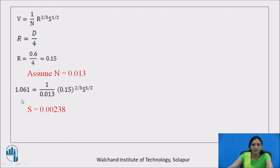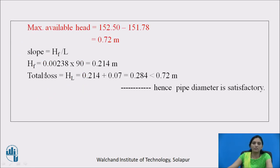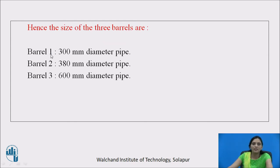Using Manning's formula, calculate slope for Barrel 3: slope = 0.00238. Check head loss: frictional head loss = slope × length = 0.00238 × 90 = 0.214 m. Total head loss = 0.214 + 0.07 = 0.284 m, which is less than 0.72 m. Hence, the 600 mm diameter pipe is satisfactory for Barrel 3. The three barrels are: Barrel 1 — 300 mm diameter, Barrel 2 — 380 mm diameter, Barrel 3 — 600 mm diameter.